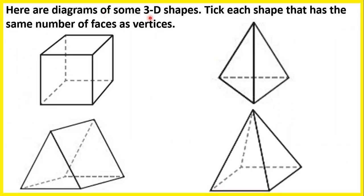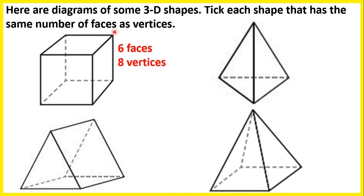Here are diagrams of some 3D shapes. Tick each shape that has the same number of faces as vertices. With 3D shapes, faces are the flat sides and vertices are the pointy corners. On this shape, we have 6 faces and 8 vertices — 4 in the corners at the top and 4 at the bottom. So we have a cube, but we do not have the same number of faces as vertices.